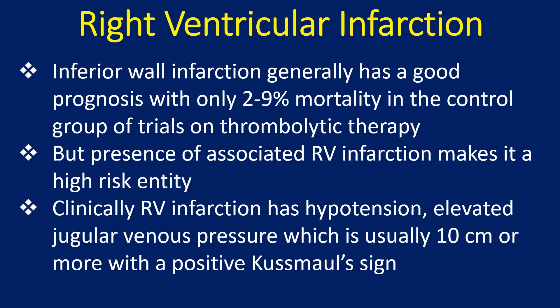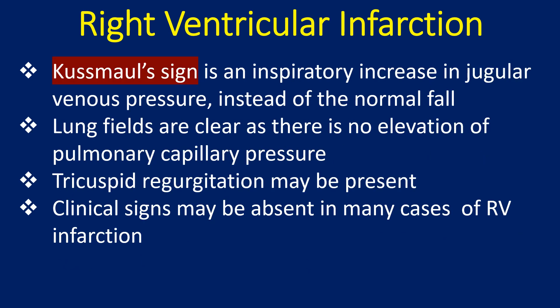But the presence of associated RV infarction makes it a high-risk entity. Clinically, RV infarction presents with hypotension and elevated jugular venous pressure, which is usually 10 cm or more, with a positive Kussmaul sign. Kussmaul sign is an inspiratory increase in jugular venous pressure instead of the normal fall.